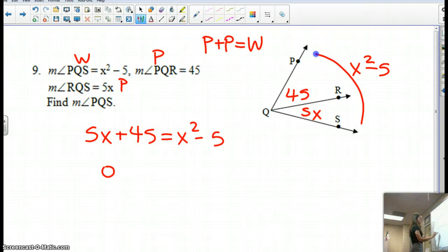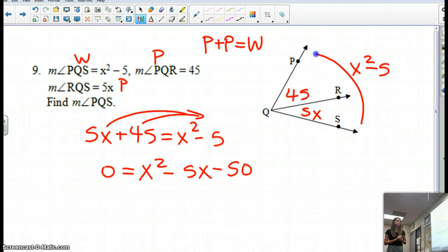So I'm going to have zero equals x squared minus 5x minus 50. What I did was I brought these two guys over by subtracting them from both sides. Alright, so now we have to factor this guy.